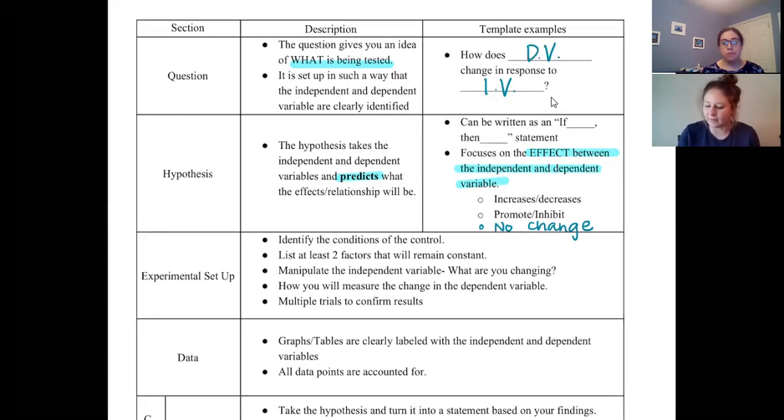So the next thing that we're going to go over is the experimental setup. Now the first thing I want to point out is that this should be in paragraph form. You cannot list the steps that you would do like you might have done in other classes. You won't get points for using a bulleted list on an FRQ.